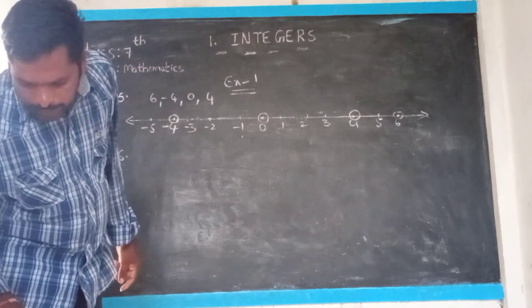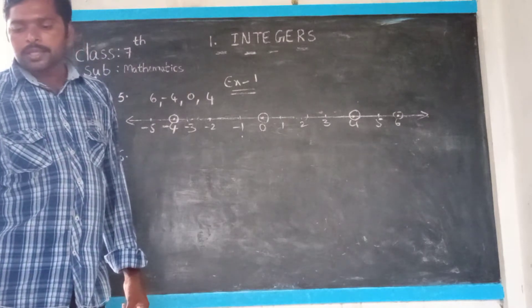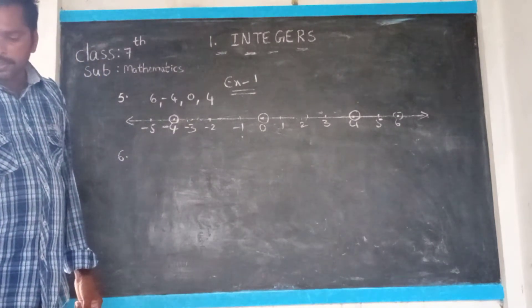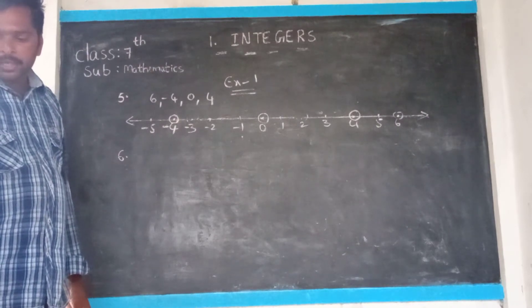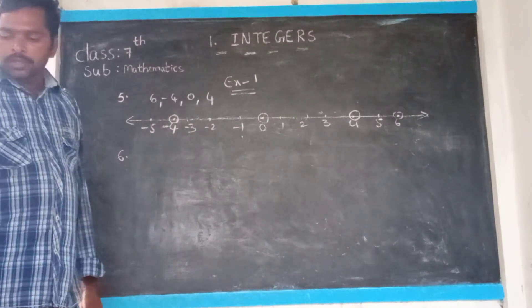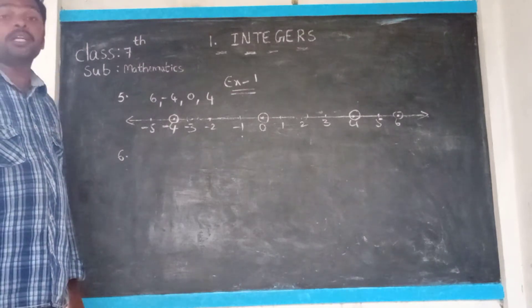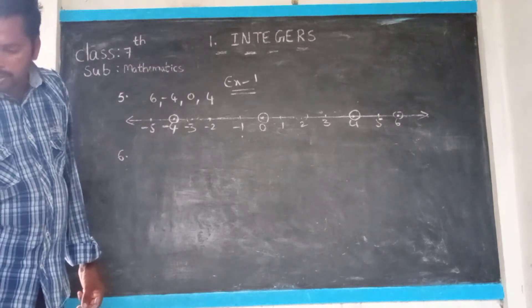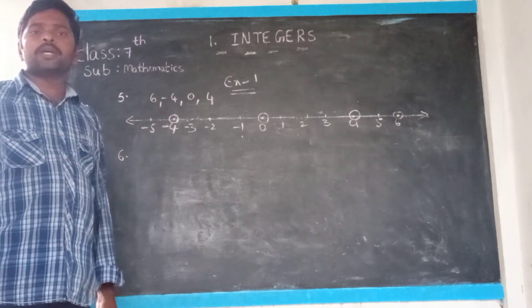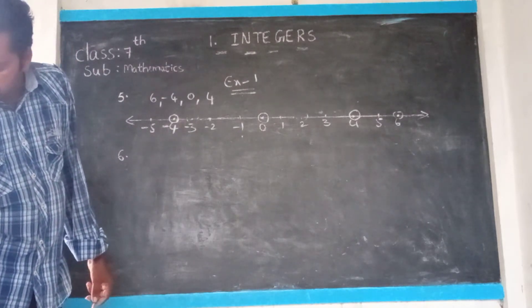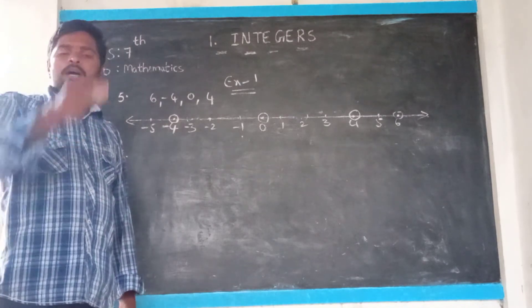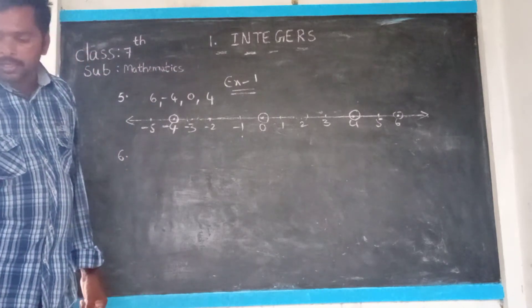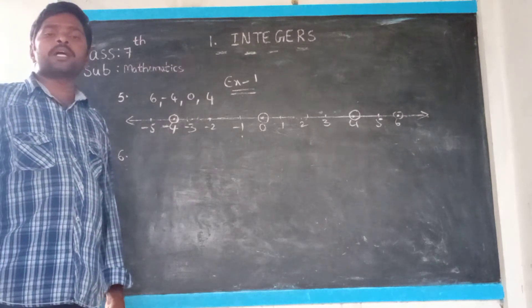Second question: which city has the highest temperature? The temperatures given are: Bangalore 20 degrees, Ooty 15 degrees, Ninthal minus 3, Manali minus 7, and Kassavali minus 9. The biggest number is 20 degrees centigrade, so Bangalore has the highest temperature — 20 degrees. Third question: which city has the lowest temperature? The smallest number is minus 9 degrees centigrade, which is Kassavali. So Kassavali has minus 9 degrees centigrade — your answer is Kassavali.